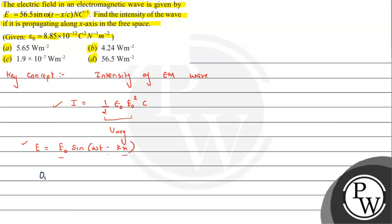Now we can see that in the question given here, on comparing with the general expression of the electric field, we can find the E₀ value. E₀ equals 56.5 newton per coulomb.